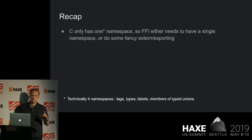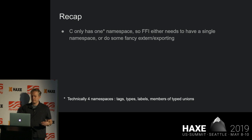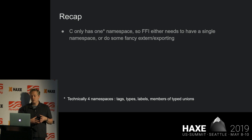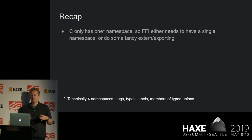Going back to the caveats: C only has one namespace — technically four, because it's got tags, types, labels, and members of type unions — but when you're talking about methods and structs, the main instances you're working with, it all goes into one namespace. You have to keep that in mind whenever you're importing your headers. Titan basically just attaches that to its own class name. It has this single namespace, and as good design practice, you need to build on that and organize the functions into platform-specific implementations and then provide a cross-platform wrapper around them.